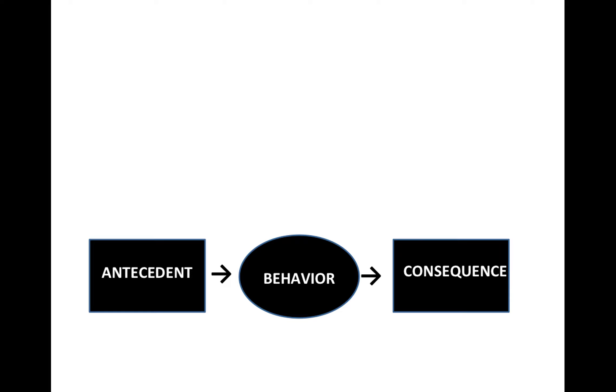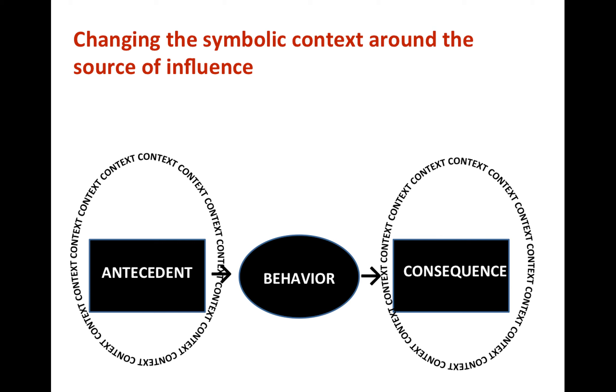To alter the way the client relates to sources of influence, we can follow two main approaches. One consists of changing the context around the source of influence, and the other consists of changing the context around the behavior. These two approaches are not mutually exclusive, but we will examine them one at a time. Let's see how they work more concretely.